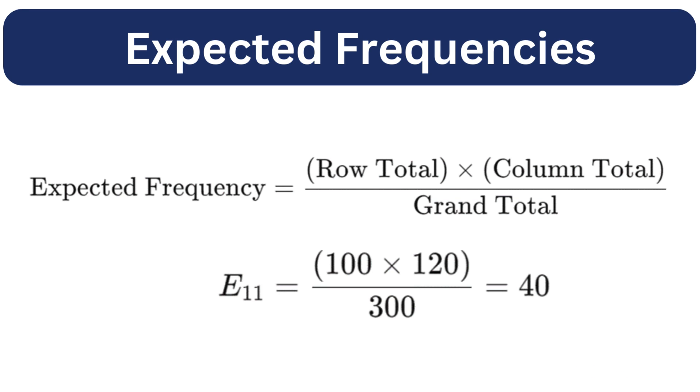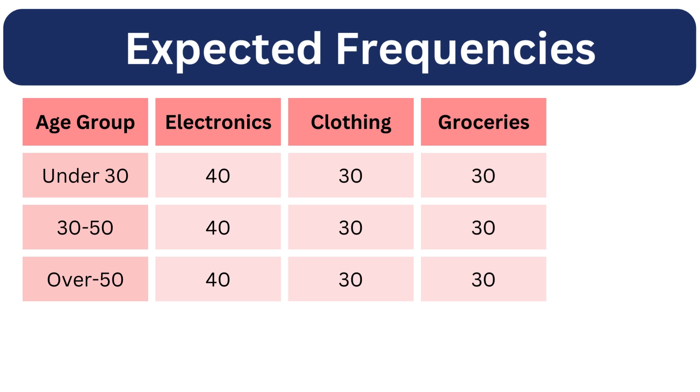We will put the product of these two in the formula and then divide by the total number of values. We will get a value of 40. We will repeat this for each and every cell in our contingency table.